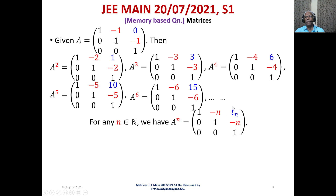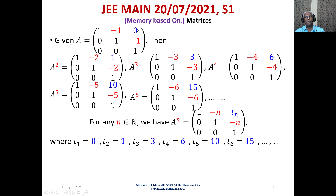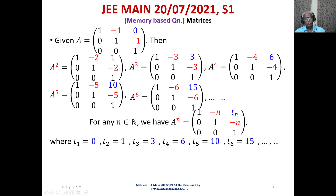We need to find the general term tₙ. We have t₁ = 0, t₂ = 1, t₃ = 3, t₄ = 6, t₅ = 10, t₆ = 15. A close examination reveals: t₃ = 3 = ₃C₂, t₄ = 6 = ₄C₂, t₅ = 10 = ₅C₂, t₆ = 15 = ₆C₂. So tₙ = ₙC₂.